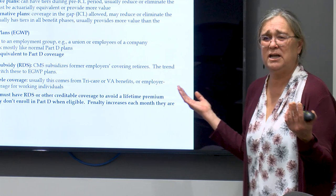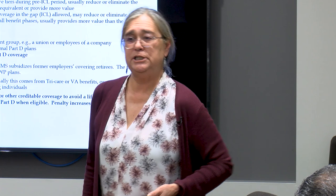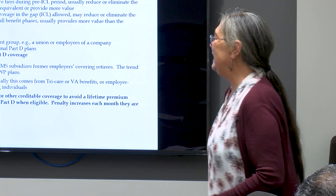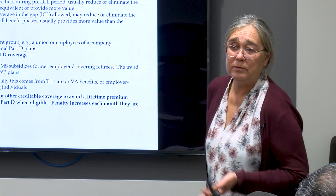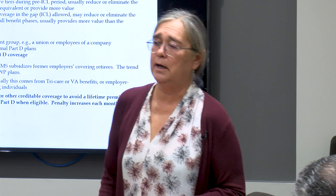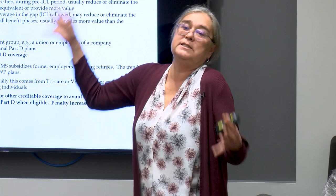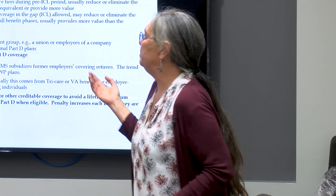Another complication is the employer group waiver plans, EGWP. They're only available to a particular employment group, like a union or retired employees of a company. Otherwise they look mostly like normal Part D plans, except they didn't have to provide much detail on their plans. So a lot of fields that tell you about what the deductible is and when they hit the ICL are missing for EGWP plans.